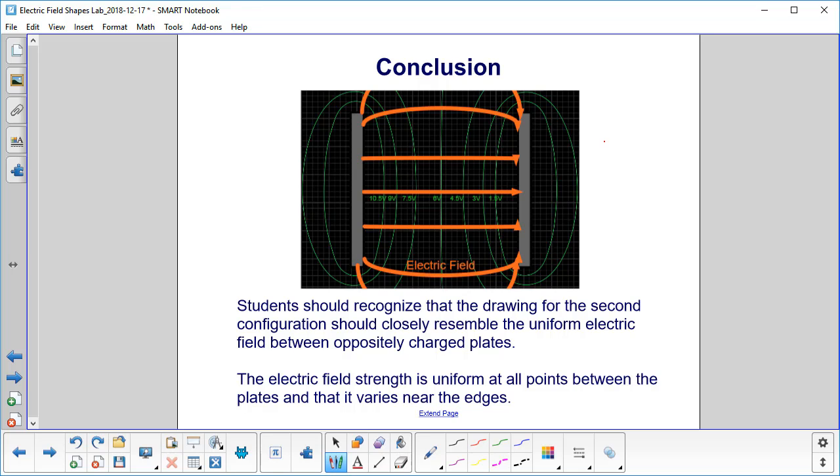Now when you set up your conducting paint like this, and you were looking for the equipotential lines in this area here, you should come up with a drawing like that that closely resembles the uniform electric field between oppositely charged plates.